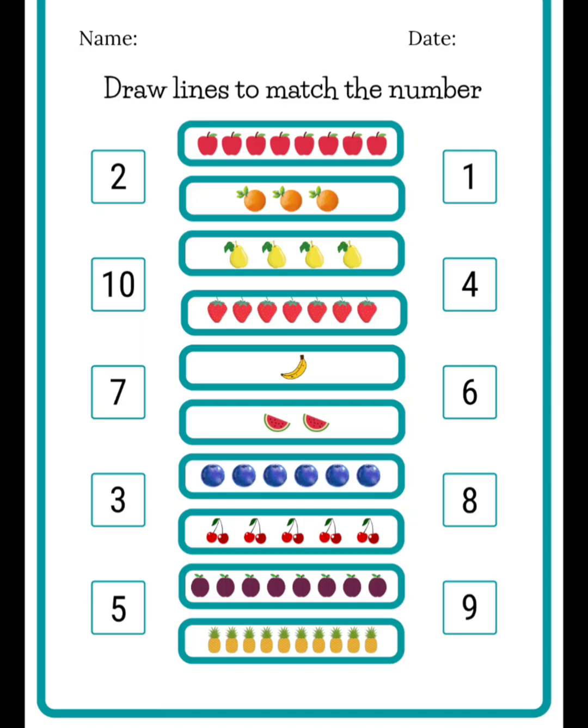In LKG, you are going to count and match, then count and write. Like here: 1, 2, 3, 4, 5, 6, 7, 8. There are 8 apples. So you are going to match 8, and here it is 1 banana only. You are going to match like this. So you know counting.